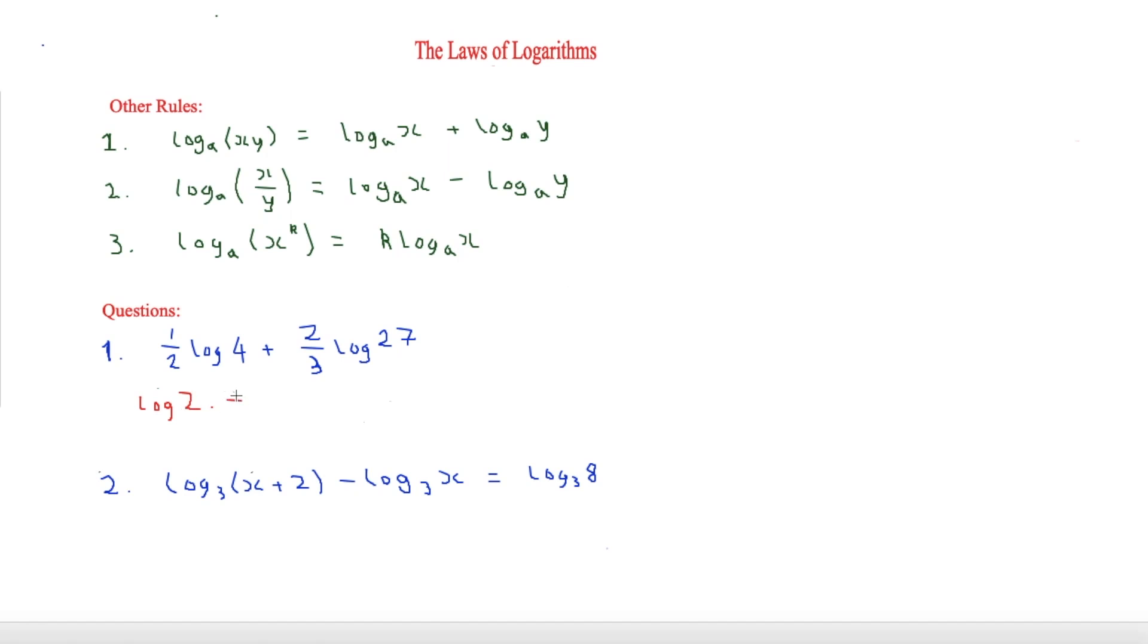Then we add. We've got two thirds there, so the two thirds is k, which goes up as a power. Log of 27 to the two thirds equals log nine. Now we use rule number one. Two is the x and nine is the y, so we do two times nine, which gives us log 18. That is our simplified answer.